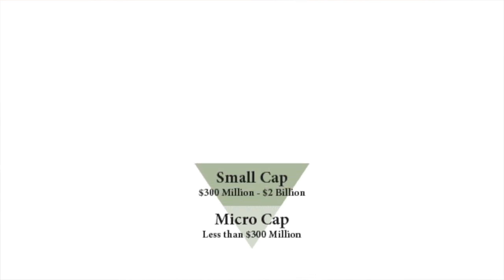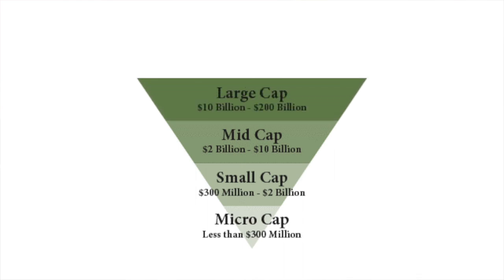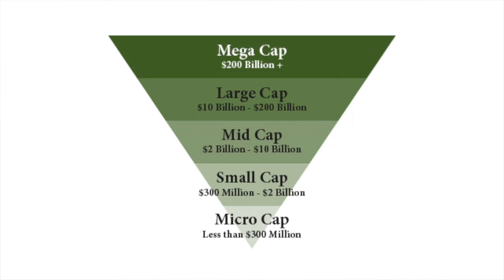Let's refresh our memories on the categories. Micro cap companies are those with market caps less than 300 million dollars. Then come small cap companies with 300 million to 2 billion dollars. In the middle there's mid cap companies from 2 billion to 10 billion dollars, large cap companies up to 200 billion dollars, and mega cap companies with more than 200 billion dollars market cap.